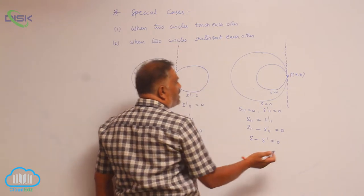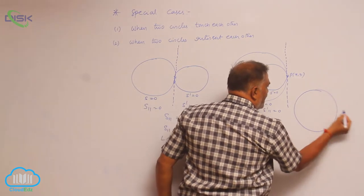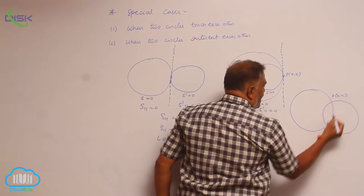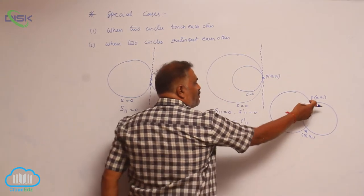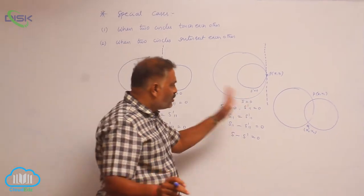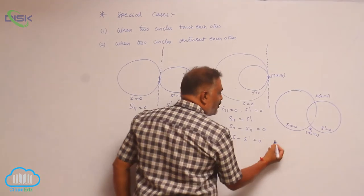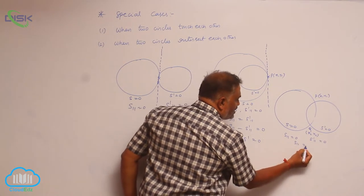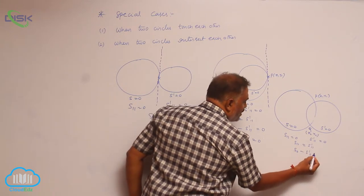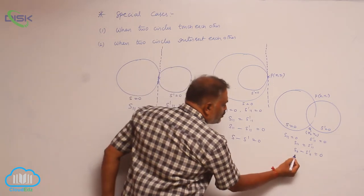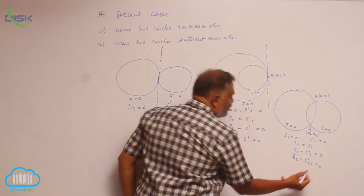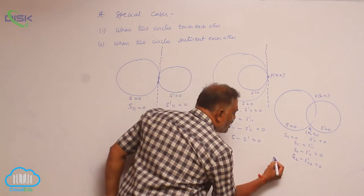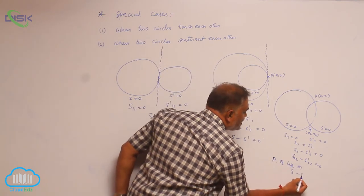Case 2: when the two circles intersect each other. Maximum they intersect at two points. This is P(x1, y1) and this is Q(x2, y2). Both points P and Q lie on both the circles S = 0 and S' = 0. So S11 = 0, S'11 = 0, giving S11 = S'11 and S11 − S'11 = 0. Similarly, S22 − S'22 = 0. Here, 11 indicates point P and 22 indicates point Q. That means both P and Q lie on S − S' = 0.